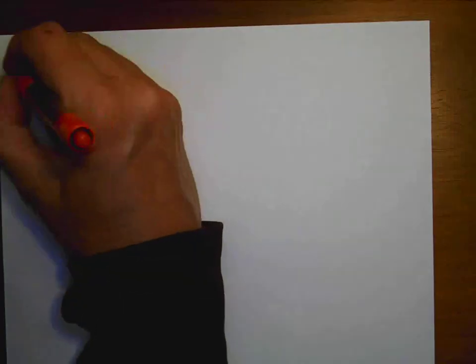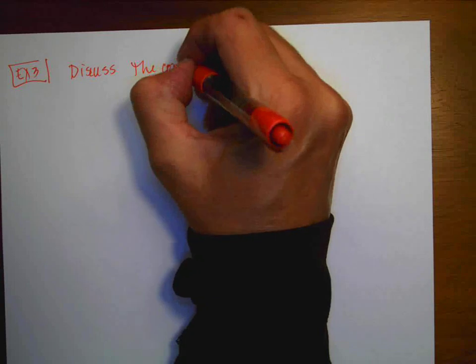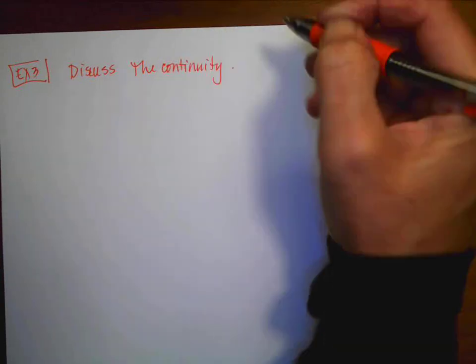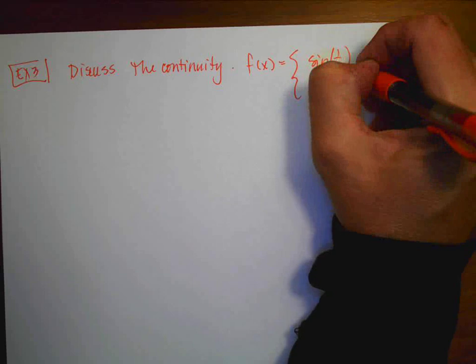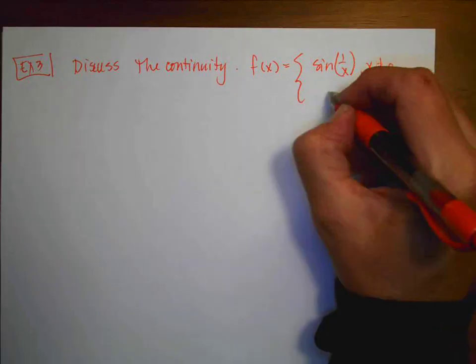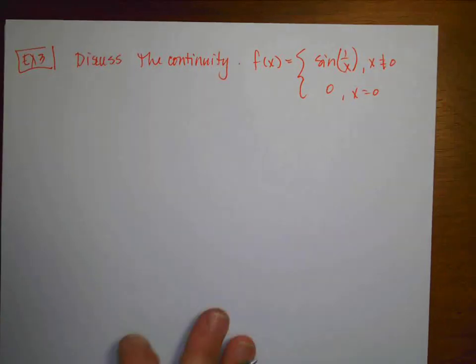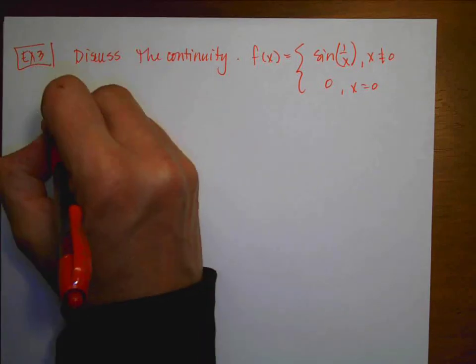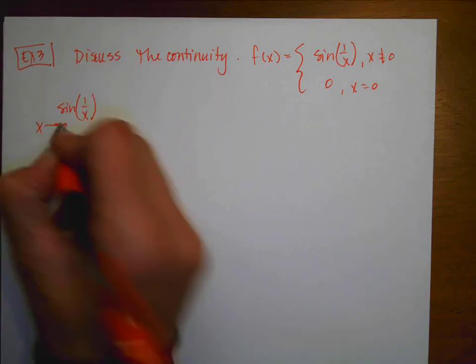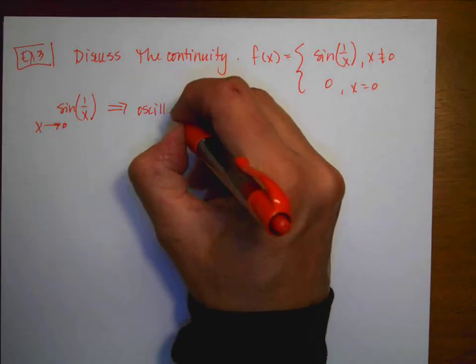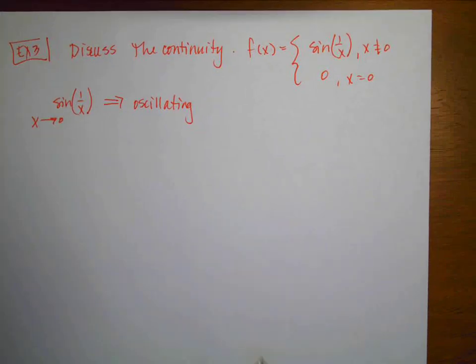All right, example number 3 is, again, going to say, discuss the continuity. And our function is going to be f(x) = sin(1/x) for x ≠ 0, and then it's going to equal 0 when x = 0. So I'm going to break this and consider each piece separately. So remember that sin(1/x), as x approaches 0, is going to be an oscillating function.